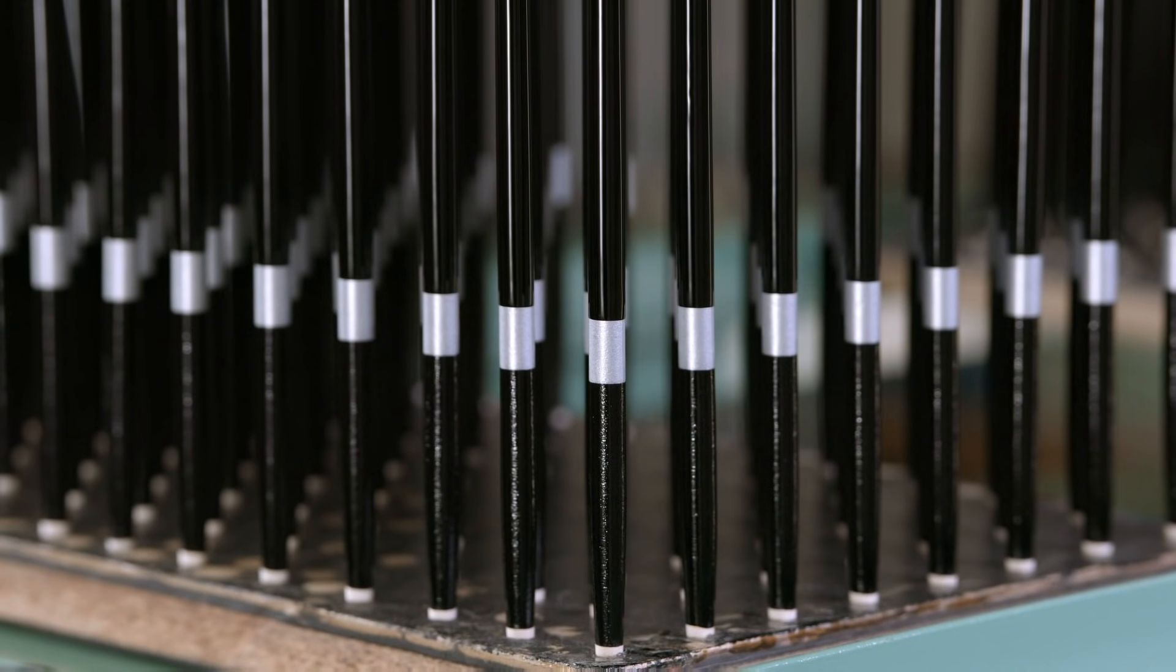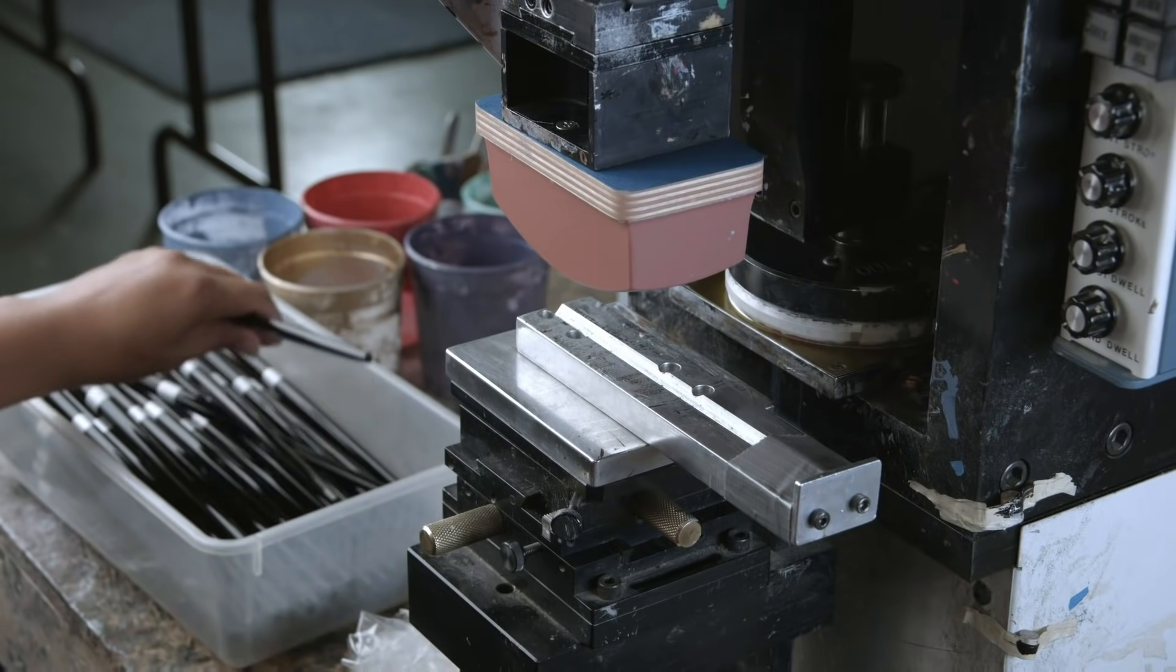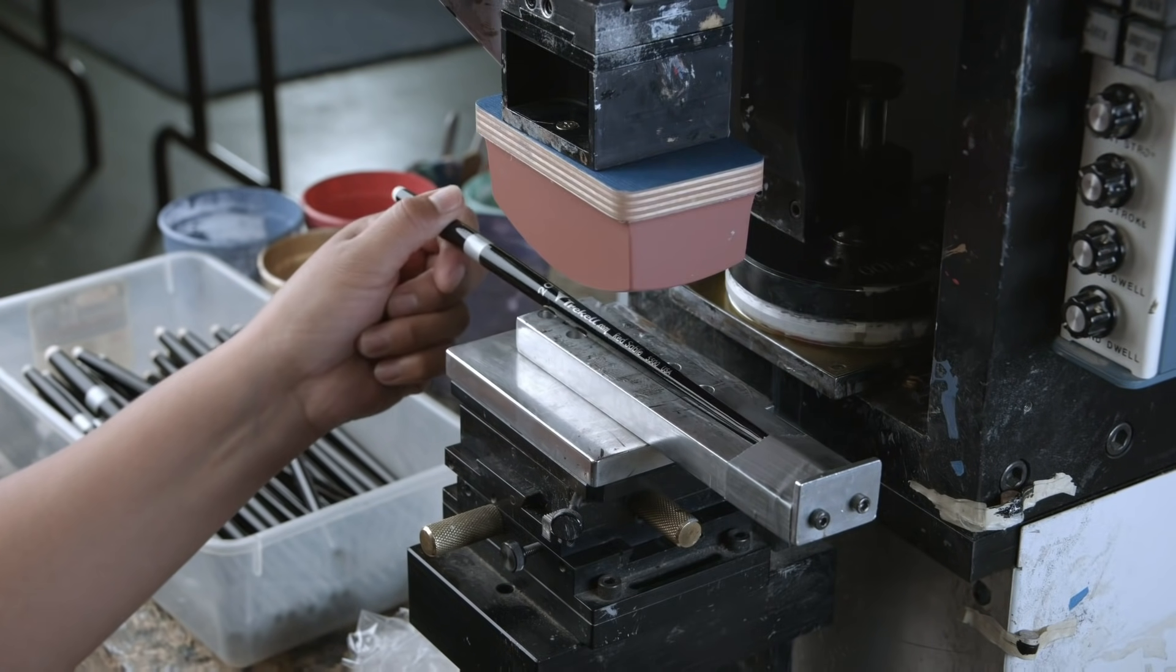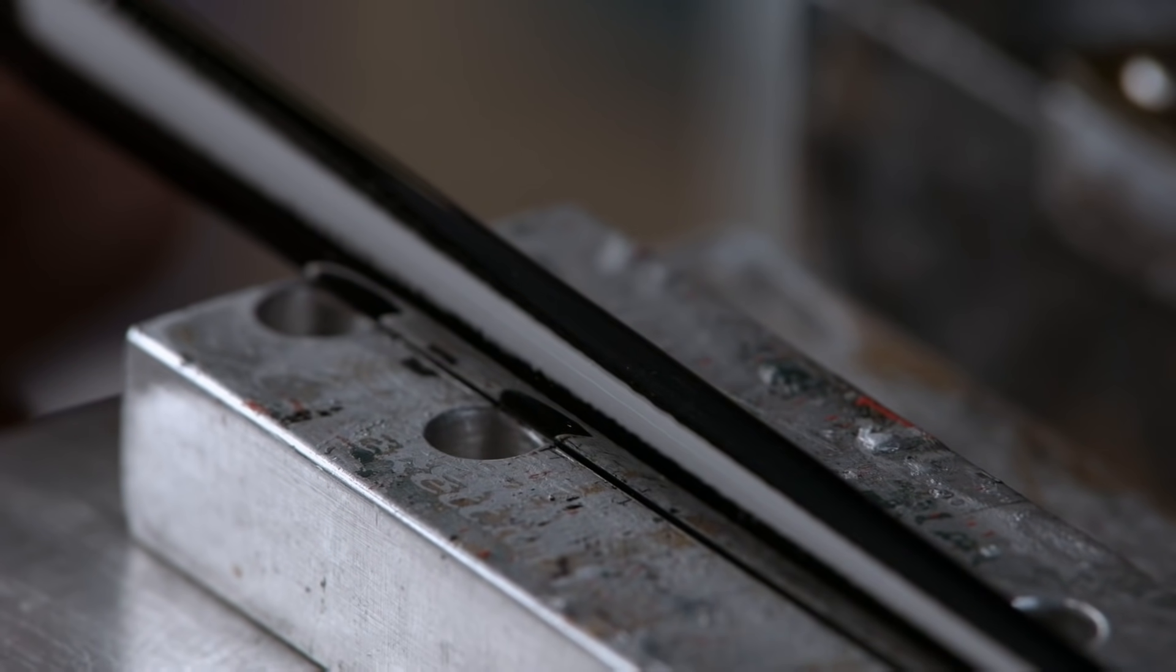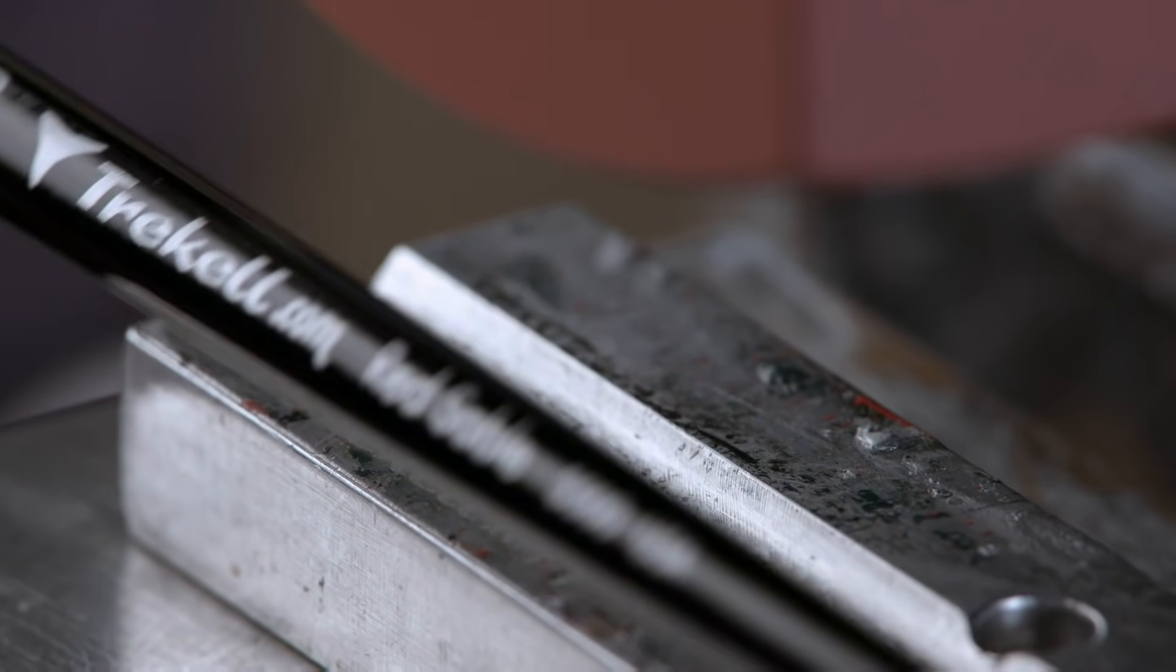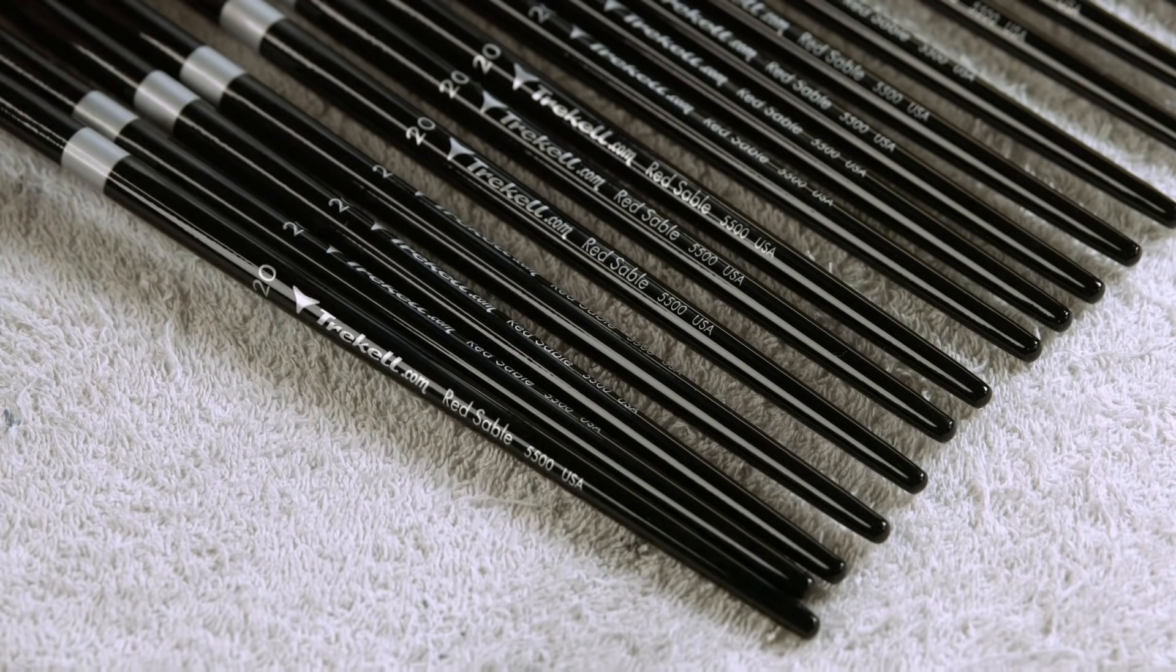After the final coat has dried, a pad printer stamps key information onto the handle in quick drying silver ink. One stamp adds the brush hair material used, the size of the brush, the series number, as well as the manufacturer's name.